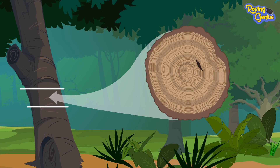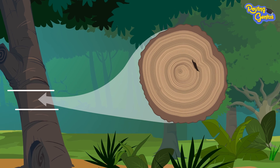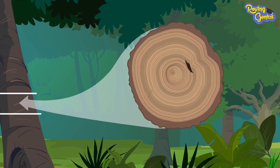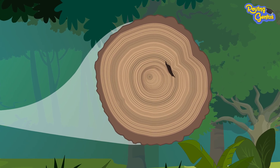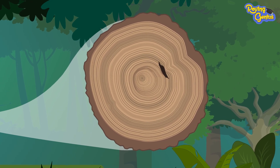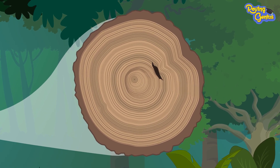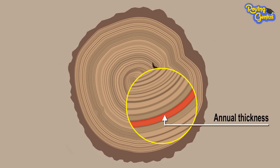If we have a close look at the cross section of a tree, we can see a number of roughly concentric circles or rings growing from the middle outwards. The gap between any two of these circles indicates each annual thickness of wood.